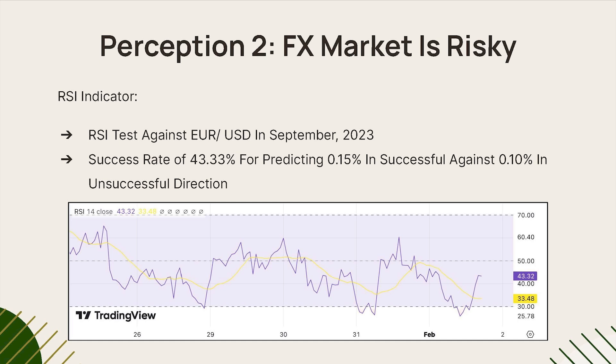The second indicator I tested was the RSI indicator, which has a value between 0 and 100. When the RSI drops below 30, the Forex pair is undervalued and it's a buy signal. When the RSI goes above 70, it's overvalued and it's a sell signal. Tested against EUR/USD for September 2023, it had an efficacy of around 43.33%. However, with a high reward-to-risk ratio of around 1.5, you can still make profits even with an efficacy below 50%, because additional profits would exceed additional losses.